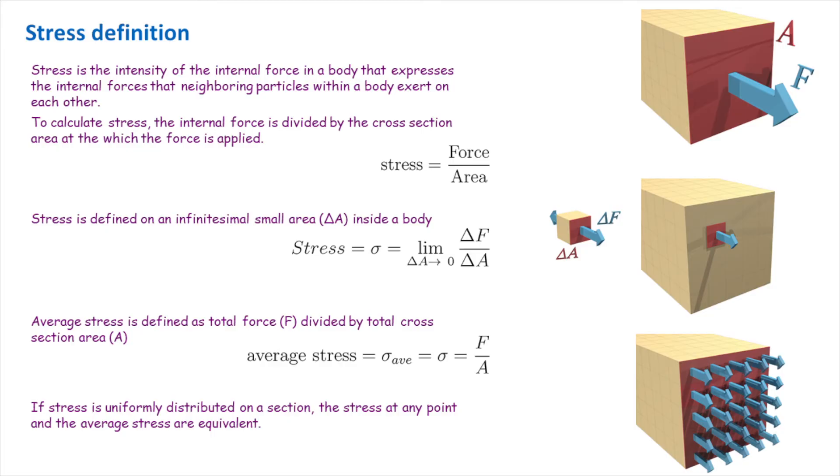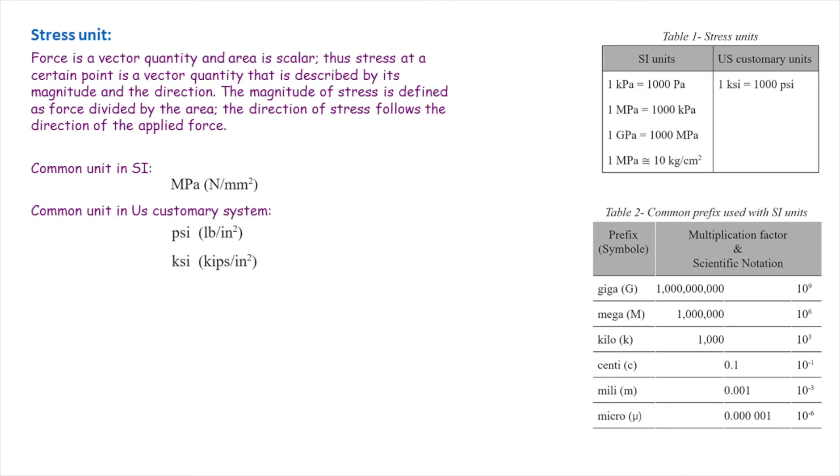Stress is typically designated by Greek letter sigma or tau. The common unit for stress in SI system is megapascals, which is equal to one Newton force divided by an area of one squared millimeter. Pascal and kilopascal or kilogram over squared centimeter are other common units in this system. In the US customary system, PSI, which is one pound over one squared inch, or KSI, which is one thousand pound over one squared inch, are common units for stress.